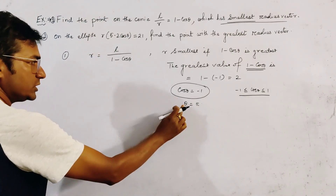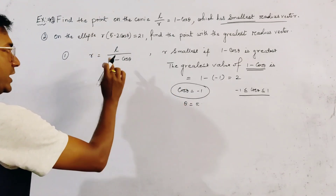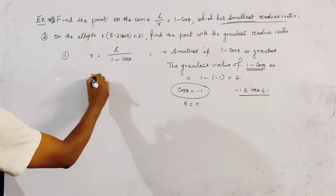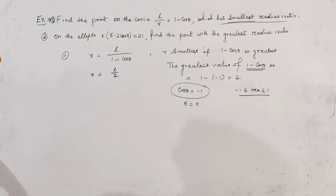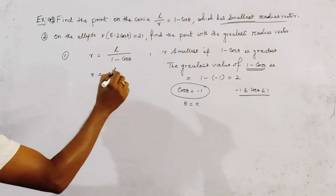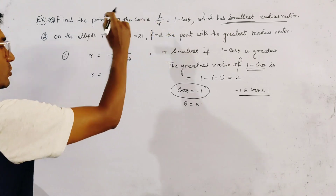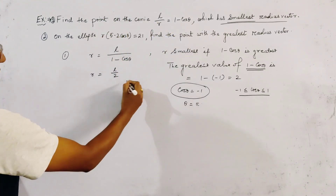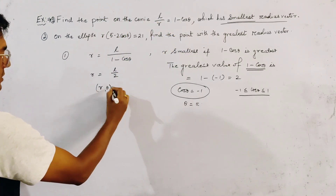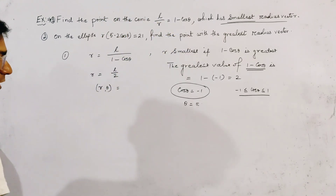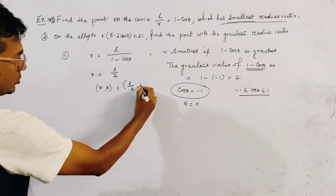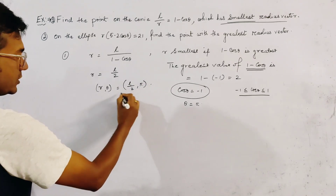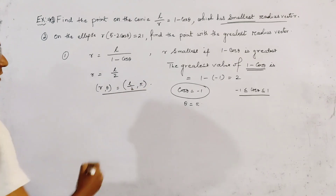If we put θ = π, we get R = L/2. So the point on the conic is given by (R, θ) = (L/2, π). This is the answer of the first problem.